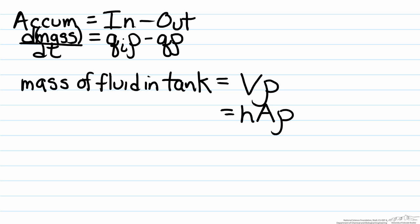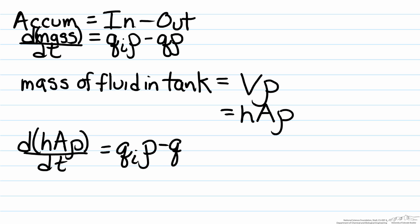Now that we have solved for the mass part in the accumulation equation, we can just substitute that in. And we have d multiplied by h A rho dt equals qi rho minus q rho.